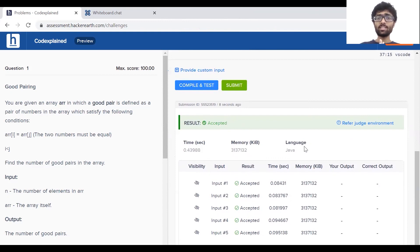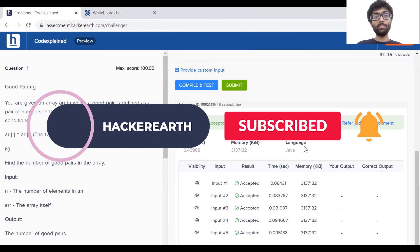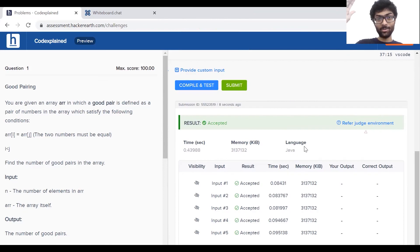So guys, that's the solution to the problem, Good Pairing. I hope you like my explanation and make sure you remember these hash maps because we're going to be using it in a lot of problems to come. Make sure you hit the three golden buttons, you know, like, subscribe and the bell icon. Leave your comments down below. It's been Vivek guys. I'll see you next time.